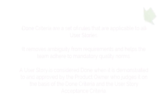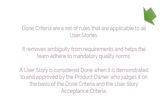Done Criteria are a set of rules that are applicable to all user stories. They remove ambiguity from requirements and help the team adhere to mandatory quality norms. A user story is considered done when it is demonstrated to and approved by the product owner, who judges it on the basis of the done criteria and the user story acceptance criteria.